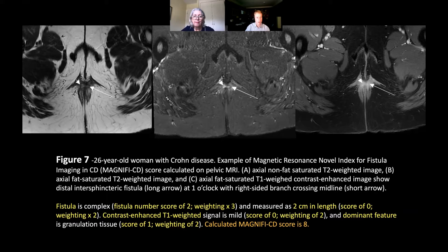This is an intersphincteric fistula, but there's an extension over to the right. Looking at the definitions for Magnify CD, this becomes a complex fistula, so it gets a score of two in that particular category. We then measured the length of the fistula — we haven't got the coronal imaging here, but this measured around two centimetres, which is actually quite short, so we've got a score of nought.